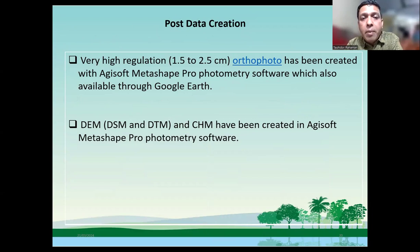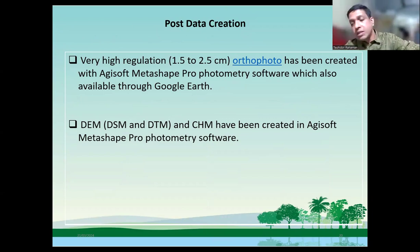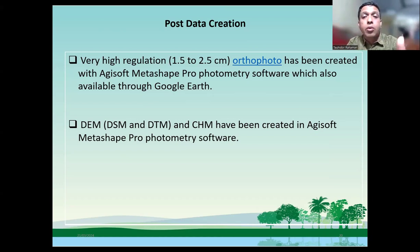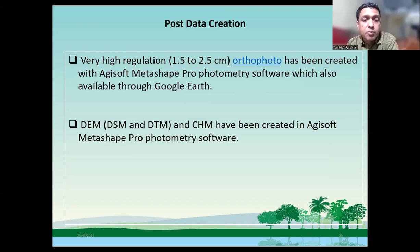We produce 1.5 to 2.5 centimeter orthophotos created in Agisoft Metashape Pro software. Because many managers do not have Agisoft software, which is specialized for geospatial professionals, we created another layer in Google Earth. It's very simple — anyone can open Google Earth and see the particular area in 3D view and live view.